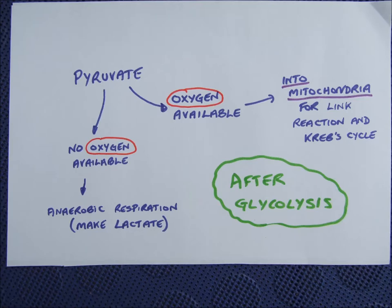Pyruvate made in glycolysis can be used if there is no oxygen in anaerobic respiration. If oxygen is present, the pyruvate enters the mitochondria and the link reaction and the Krebs cycle occur.